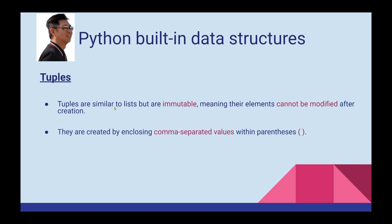Now quiz number two. Tuples are similar to lists but are immutable, meaning the elements cannot be modified after creation. Tuples are like lists but immutable. The list is created by enclosing comma-separated values within parentheses.